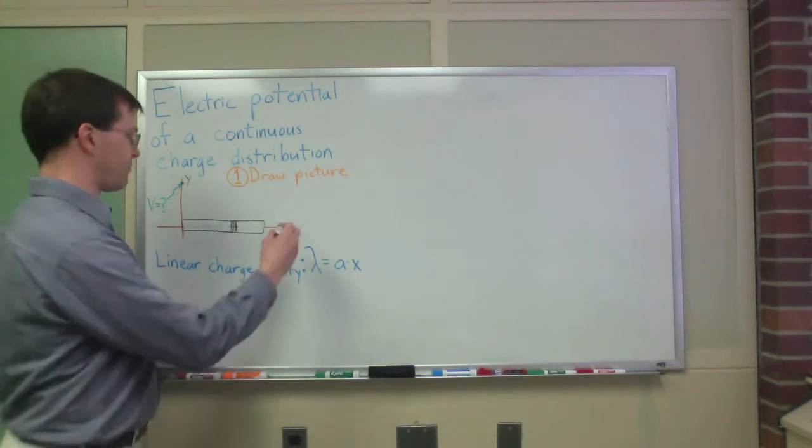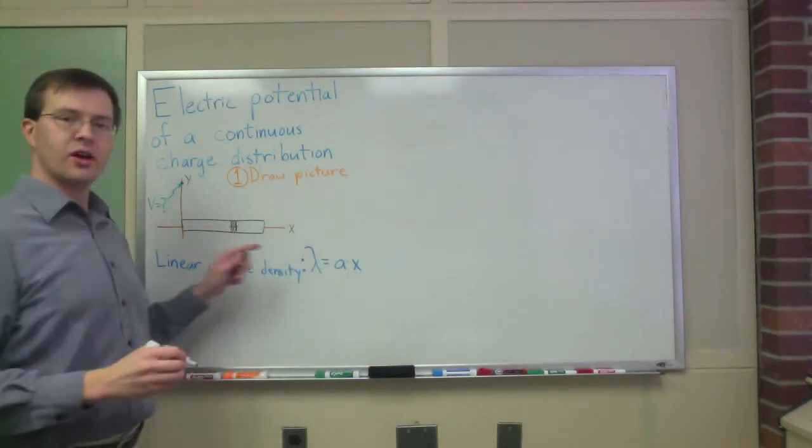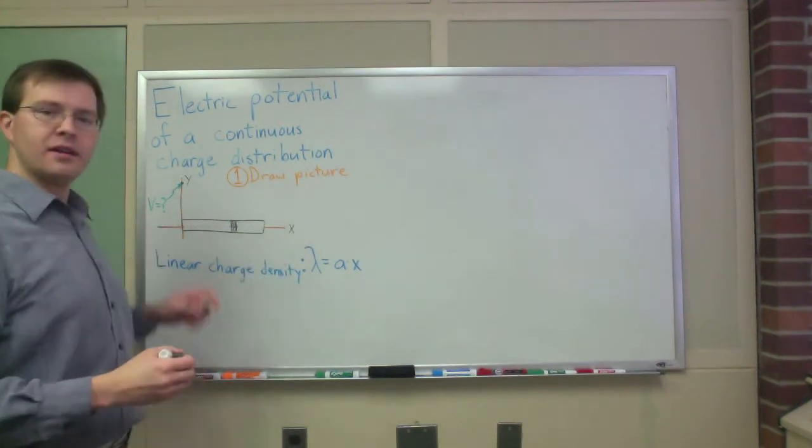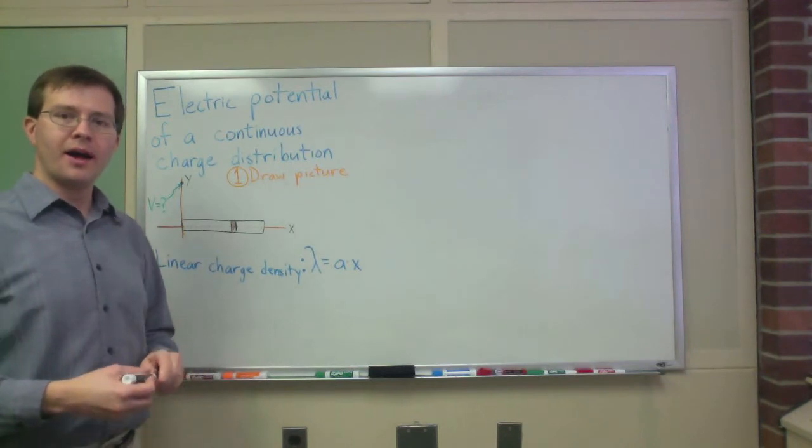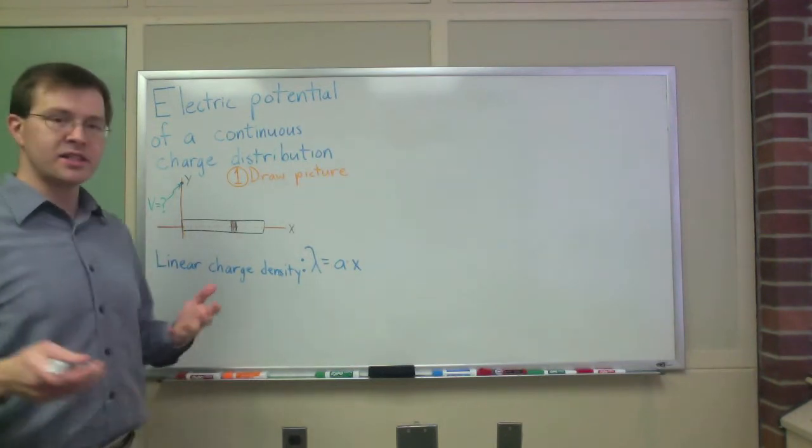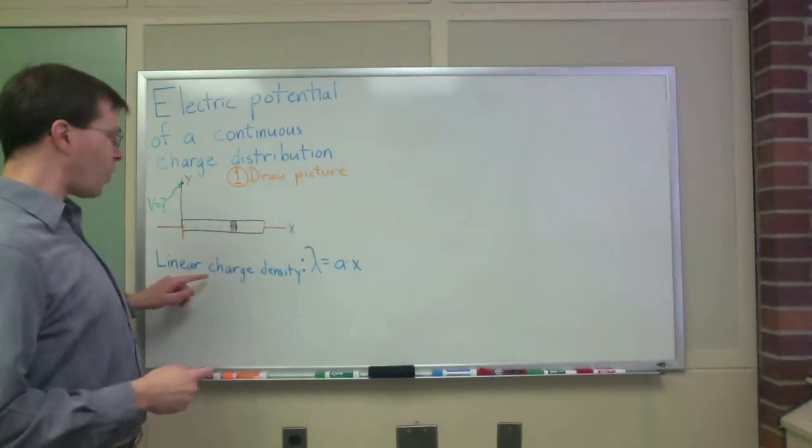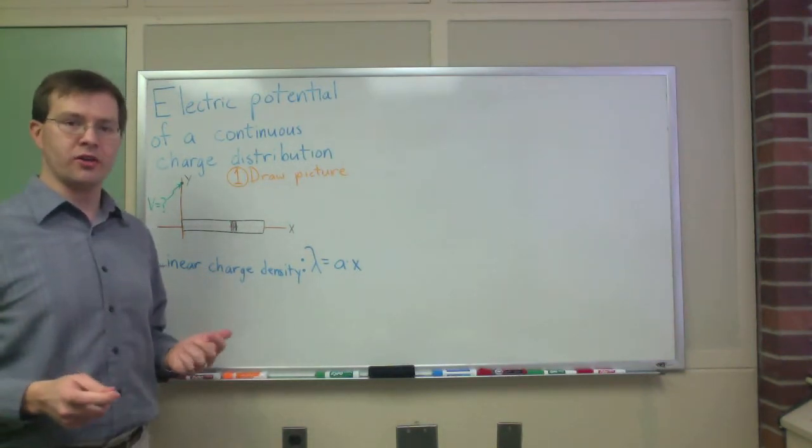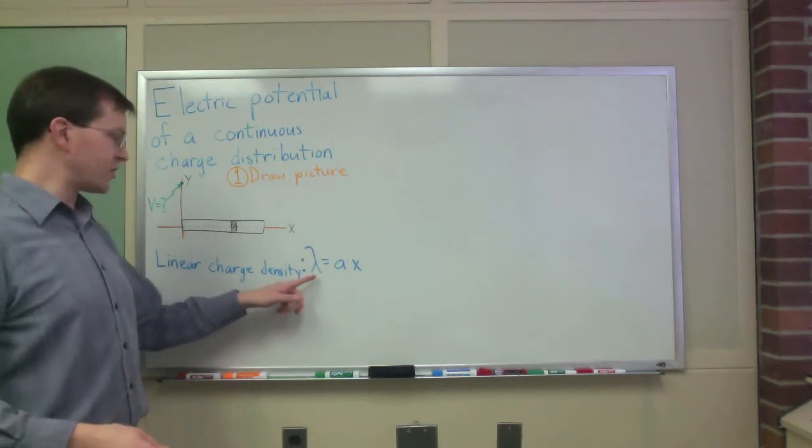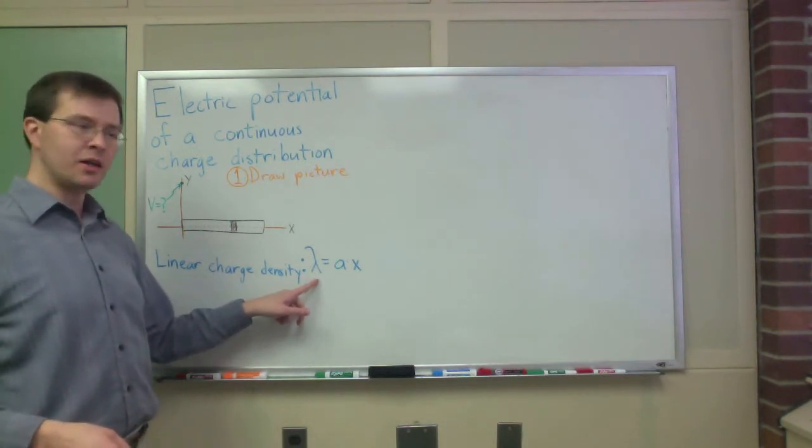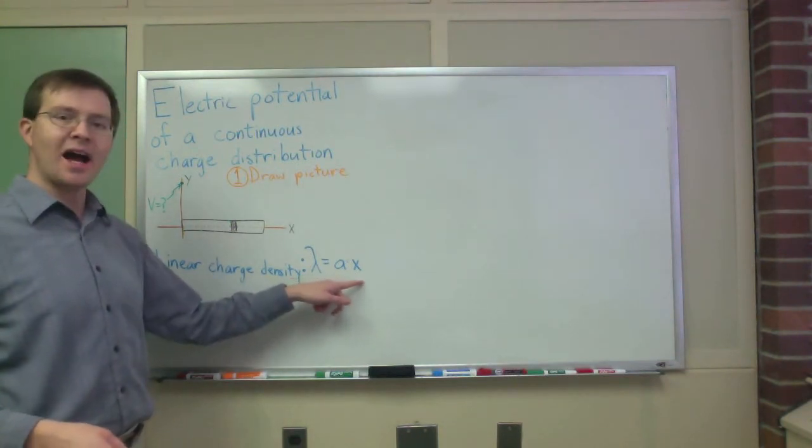I should label the x-axis because I have plans later. The rod sits along the x-axis with one end at x equals zero. This is my plan. The rod is not uniformly charged. In this problem, the rod has a linear charge density lambda which is actually a constant a times x.